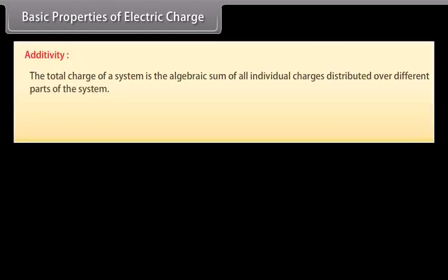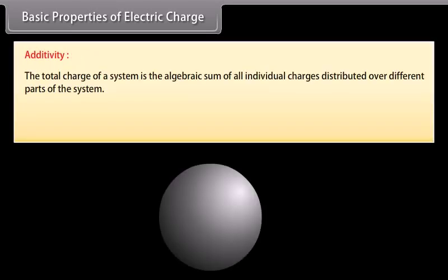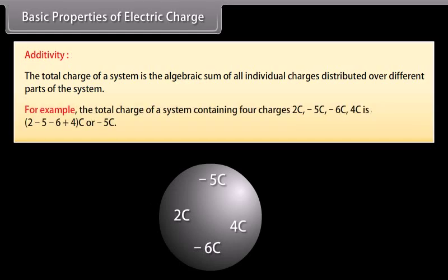Basic properties of electric charge — Additivity: The total charge of a system is the algebraic sum of all individual charges distributed over different parts of the system. For example, the total charge of a system containing four charges: 2 C, −5 C, −6 C, and 4 C is equal to −5 C.